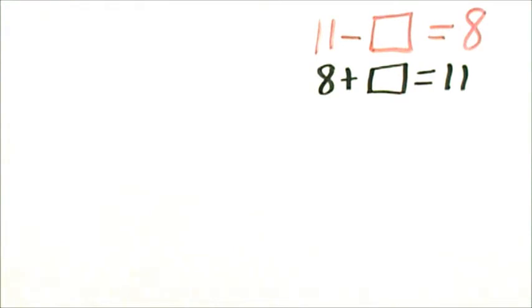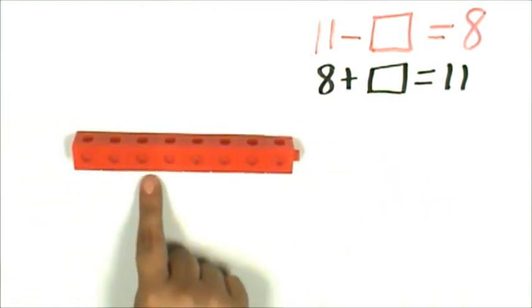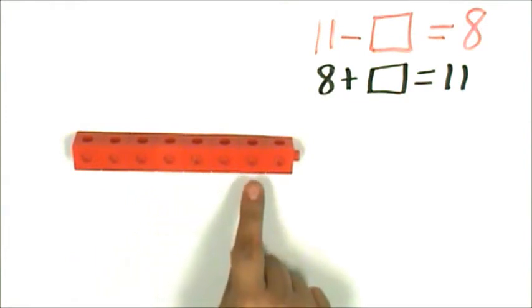First I'll use snap cubes or unifix cubes to make a train of 8 in red. 1, 2, 3, 4, 5, 6, 7, 8.